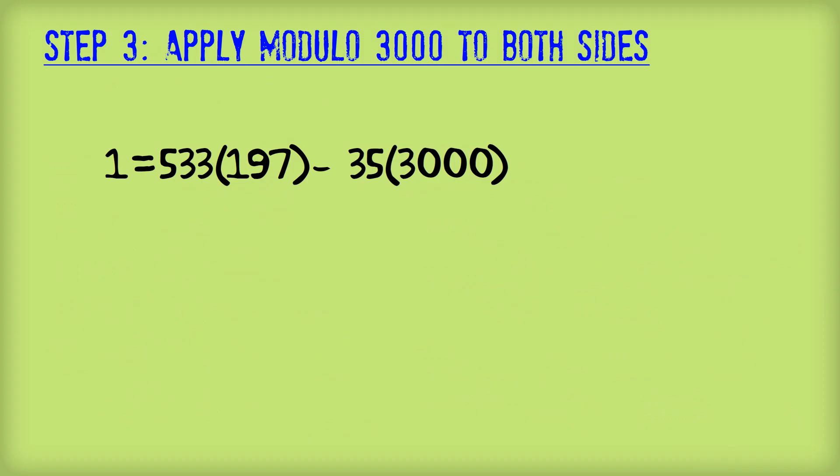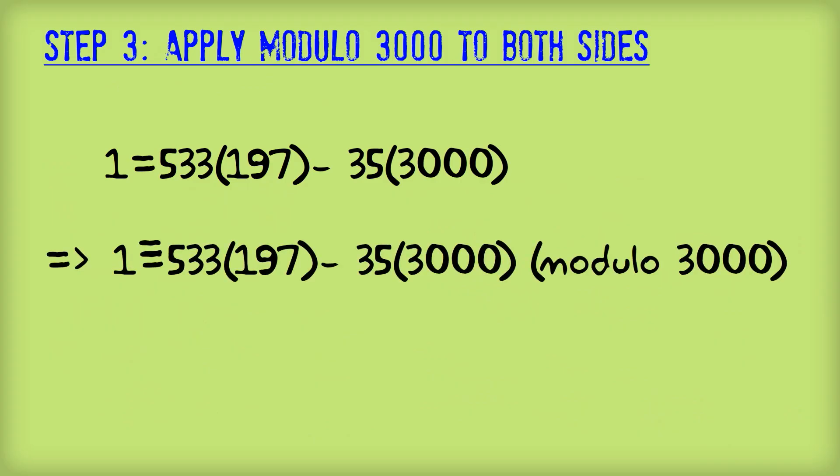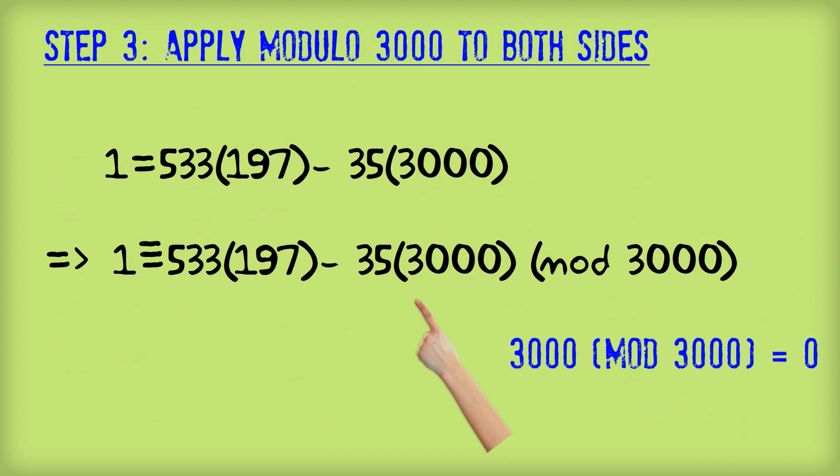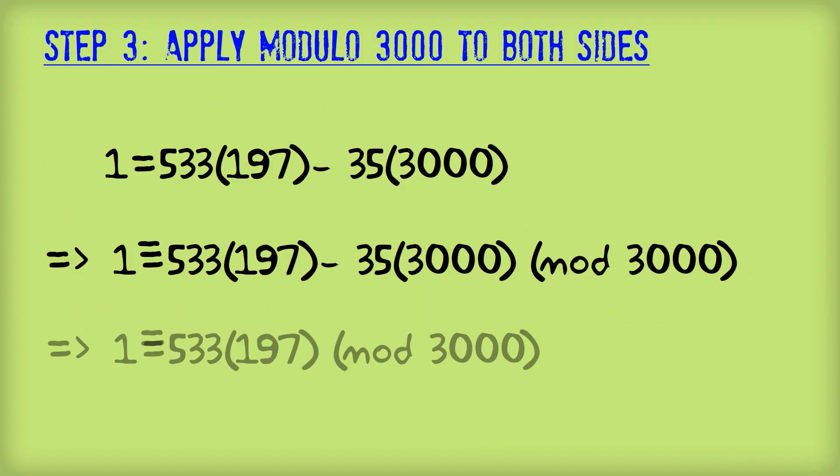So here's our equation. So modulo 1 on the left hand side is just 1. I'm going to leave this bit here for a little while. And when we look at this expression here, we see that it's got 3000 in it. And 3000 mod 3000 is just 0. So this whole expression here is just equal to 0. And we're just left with this,